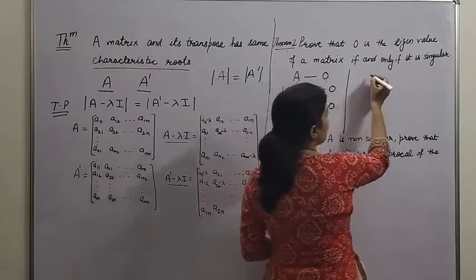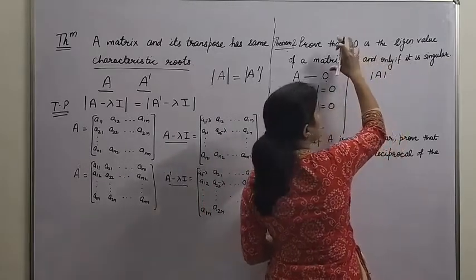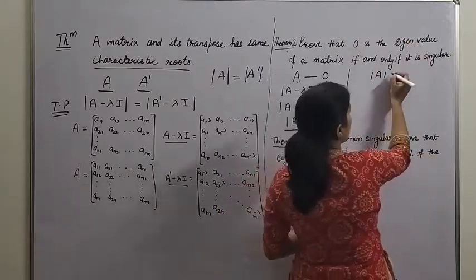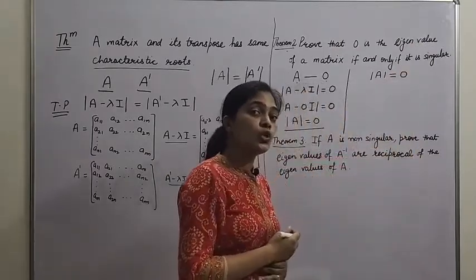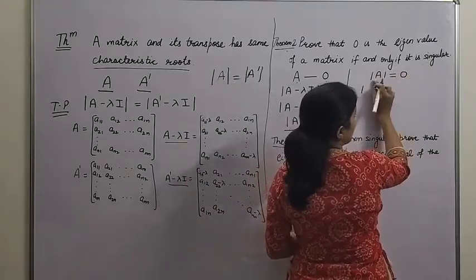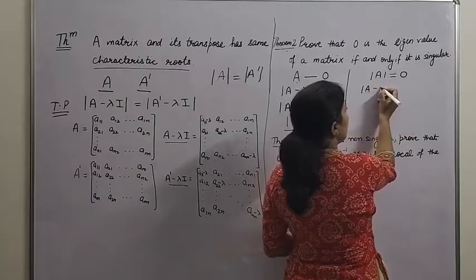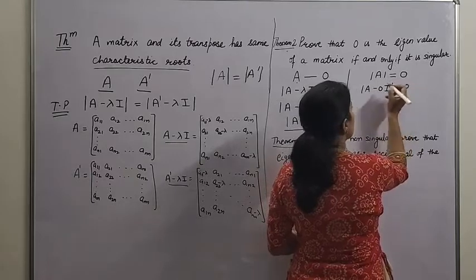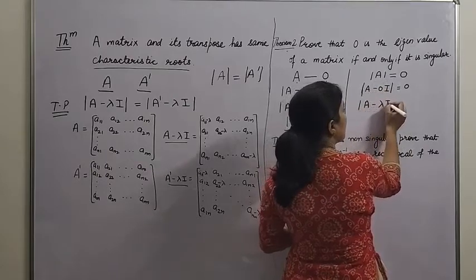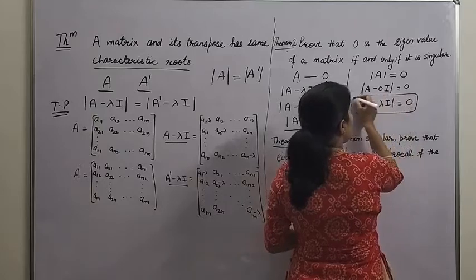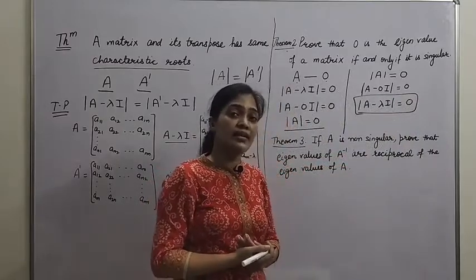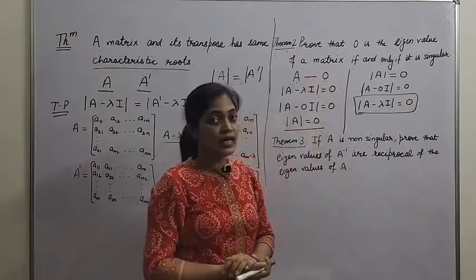Now prove the reverse for the second part, since this is an if and only if case. We have proved that if 0 is an eigenvalue, then the matrix is singular. Now prove the reverse: if A is singular, then 0 must be an eigenvalue. If A is singular, then det(A) = 0, and this can be written as det(A - 0·I) = 0. This means 0 satisfies the characteristic equation det(A - λI) = 0, so 0 is the eigenvalue of matrix A. Hence it is proved.